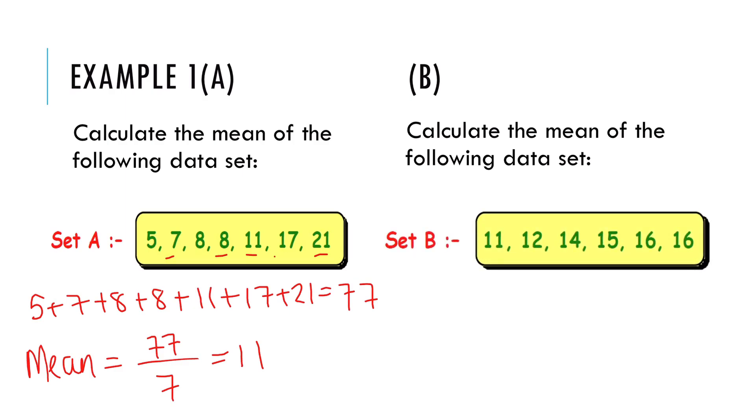In the second set of data we do the exact same thing to calculate the mean. We add together all of the data which gives me 84 and to calculate the mean I divide 84 by the number of numbers. There's 1, 2, 3, 4, 5, 6. 84 divided by 6 gives me 14. So the mean of the second set of data is 14.